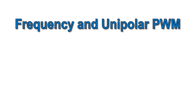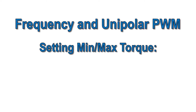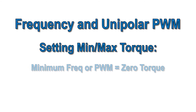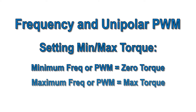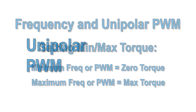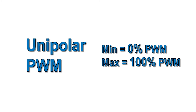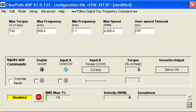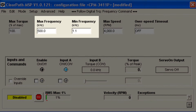Frequency mode and Unipolar PWM mode work in a similar way. You have defined minimum and maximum frequencies or PWM duty cycles, and they correspond to zero torque and your user-defined max torque, respectively. For Unipolar PWM, the minimum and maximum duty cycles are fixed at 0% and 100%. For Frequency, the minimum and maximum are user-defined.